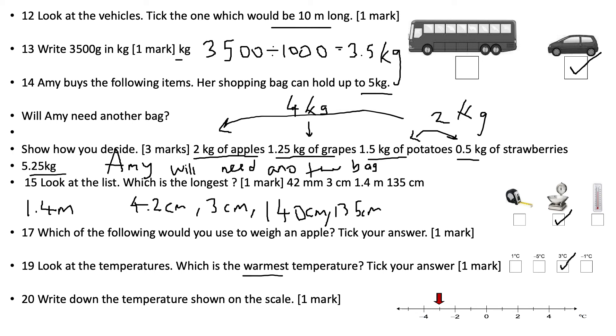Question number 20, write down the temperature shown on the scale. We're looking at our scale so it's going up in ones every time: 0, minus 1, minus 2, minus 3, minus 4, minus 5. So the answer is going to be minus 3.